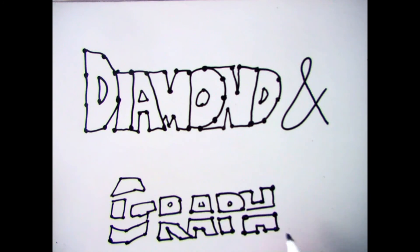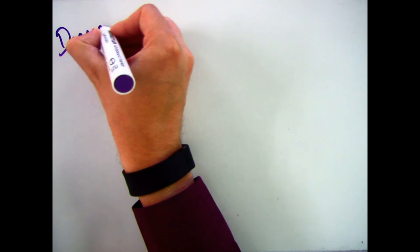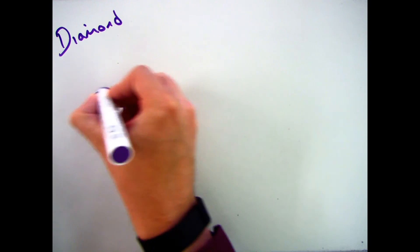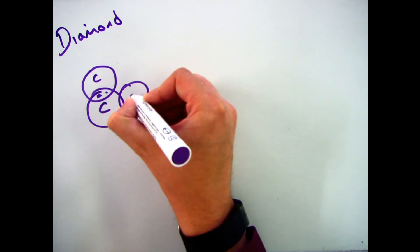Hi there and welcome to this video looking at the structure of diamond and graphite. So in one of the previous videos we talked about the fact that diamond and graphite are both allotropes of carbon.